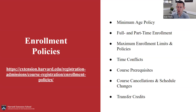Regarding course cancellations and schedule changes, courses may occasionally be canceled or rescheduled, usually due to a professor's commitments. The registrar's office will email you if your course has any changes so you can add a new course in time. For transfer credits: undergraduate degree students can transfer in a maximum of 64 credits from other institutions. Graduate degree students must complete all courses through Harvard Extension School or Harvard Summer School — transfer credits are not accepted for those programs.